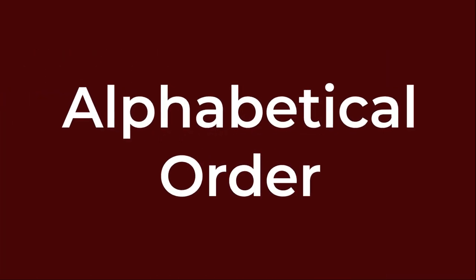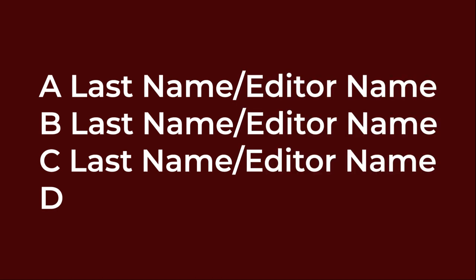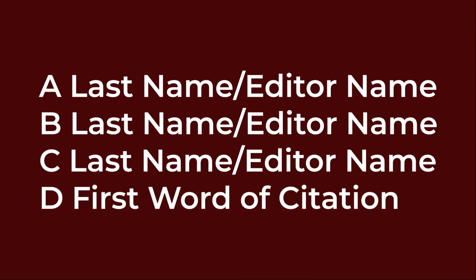Alphabetical order. Entries are listed alphabetically by the author's last name, or for entire edited collections, editors' names. In cases where there is no author, use the first word of the citation and place it appropriately in the alphabetical order.